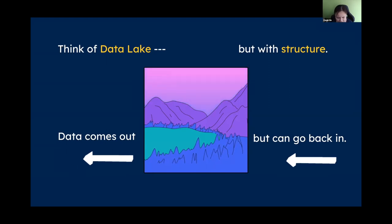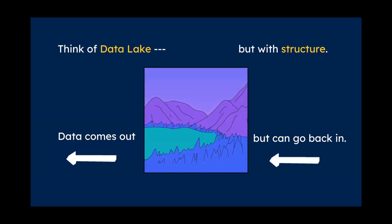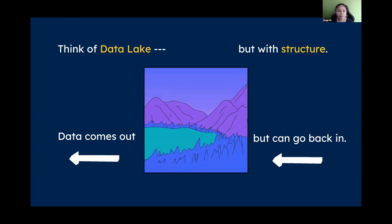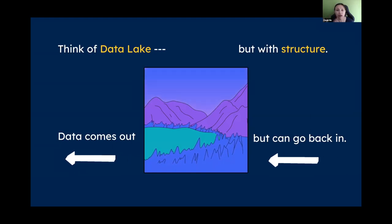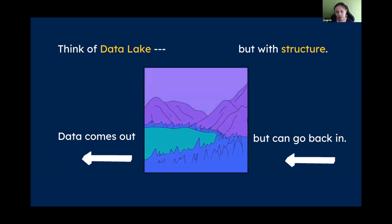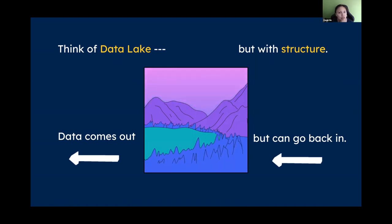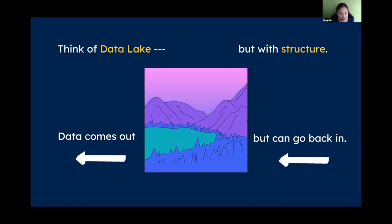In this data lake, all you have is a link to get back your data. That's the extreme end of storing data without any structure — totally flexible, you can put anything there. Versus a CSV or Google Spreadsheet, where everything needs to be in table format — you have columns and rows. Everything needs to be flat. Imagine if you have something complex, like a company structure where someone manages someone else — you'll have nested relations.